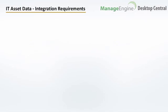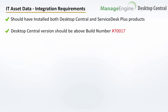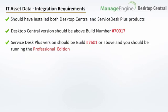Now, let us look at what it takes to integrate IT asset data with Service Desk Plus. You should be running both Service Desk Plus and Desktop Central in your network. Desktop Central build number should be 70,017 or above. Service Desk Plus build number should be 7,601 or above and you should be running the Professional Edition.